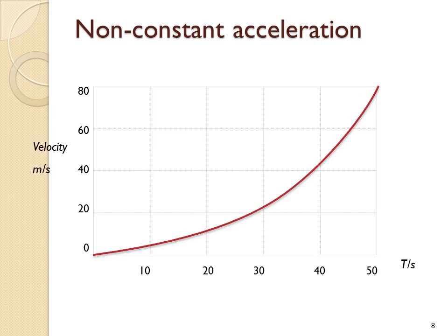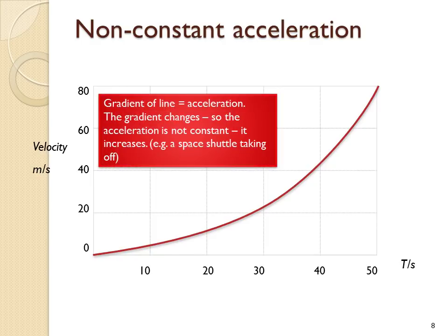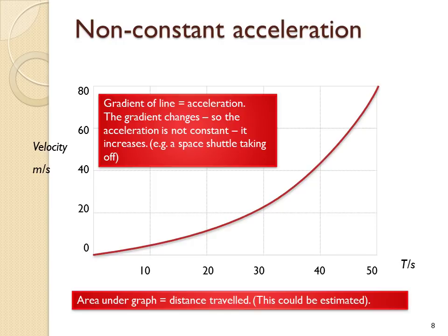Objects can accelerate at a non-uniform or non-constant rate. This velocity-time graph shows something speeding up, but the gradient of the line isn't constant — it's lower here and greater here, so the rate of acceleration increases over the journey. This could be a space shuttle taking off: the shuttle is very heavy at the beginning due to fuel, and as it burns off that fuel, its acceleration rate increases. The area under the graph still represents distance travelled, though it's harder to measure — you could estimate it using smaller grid squares.